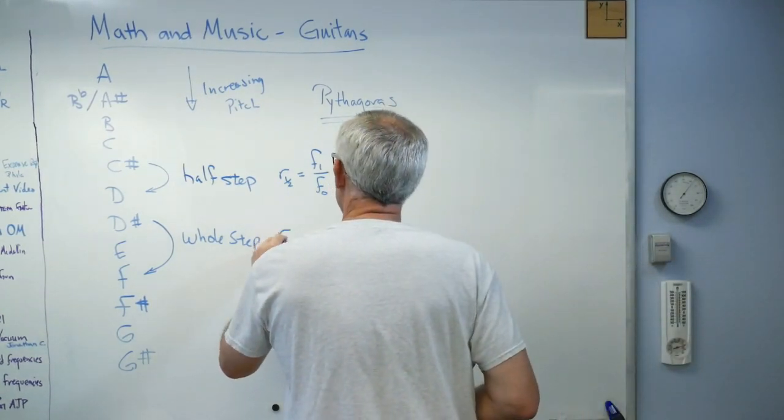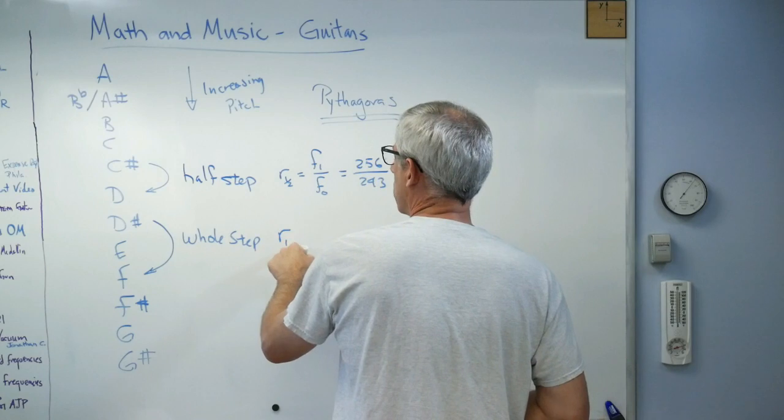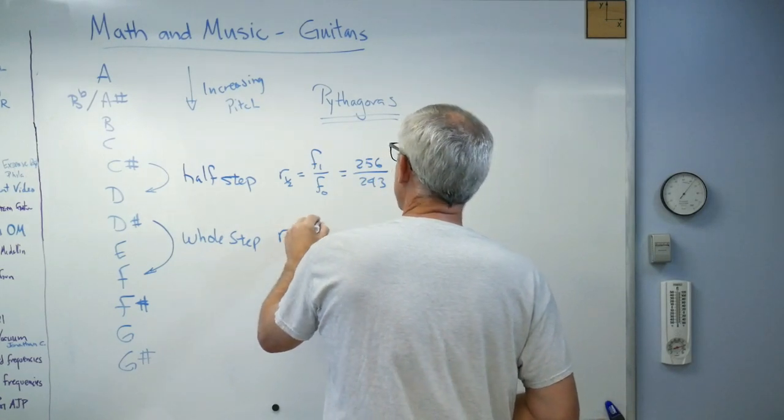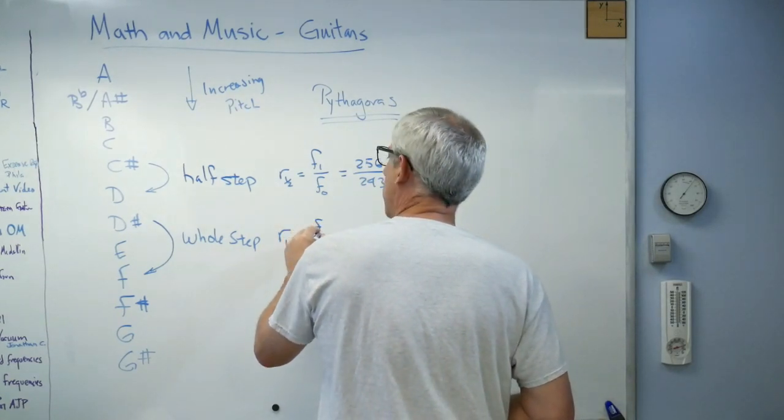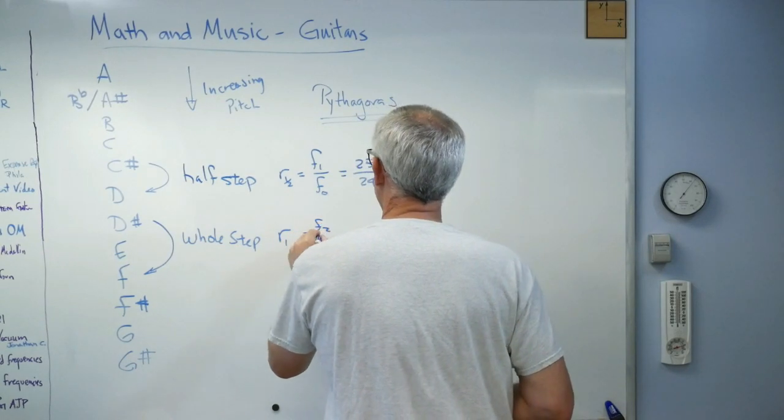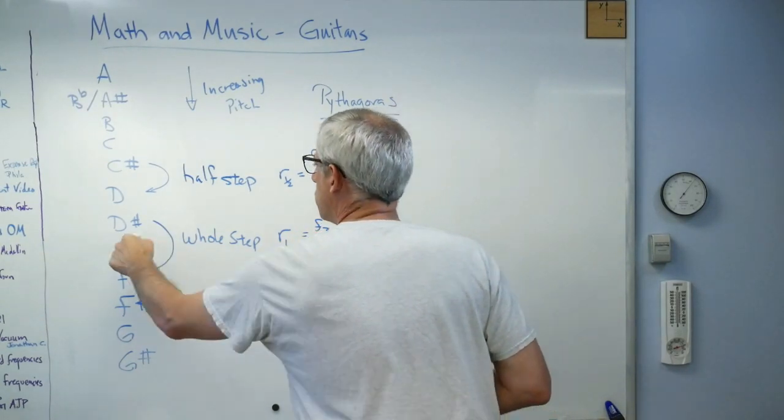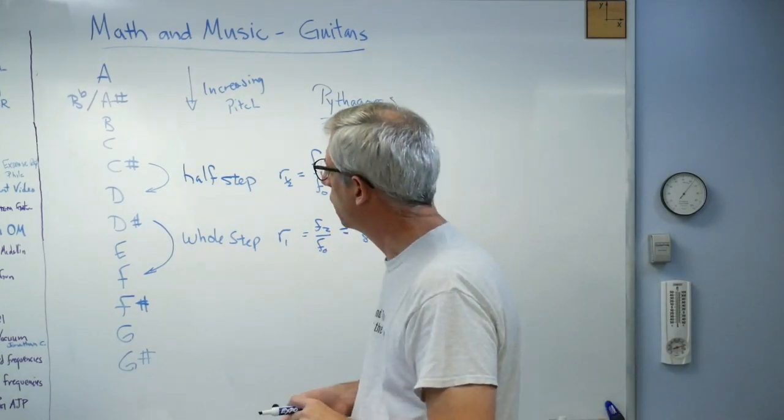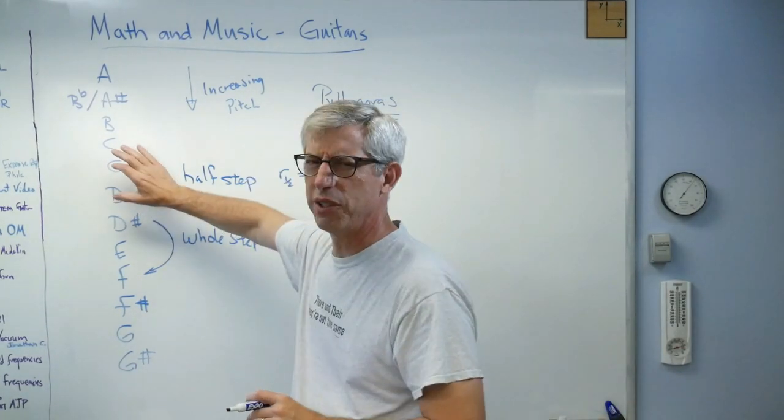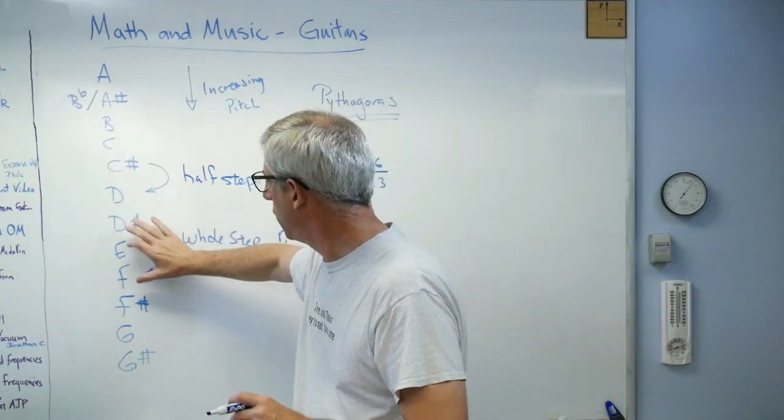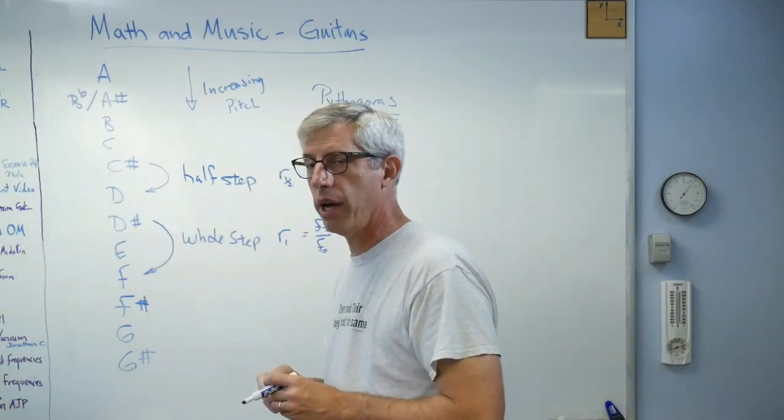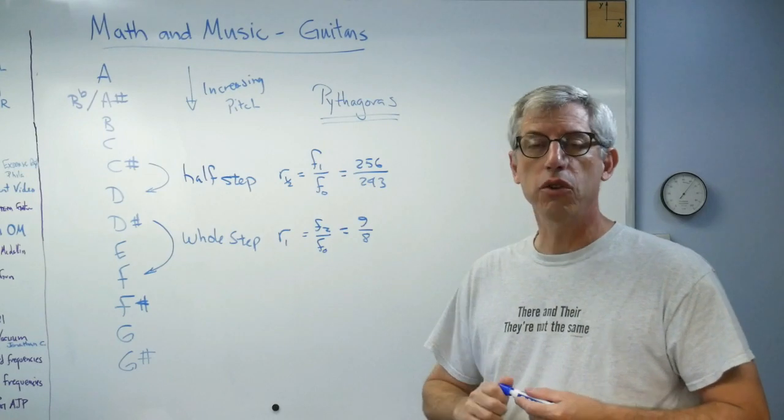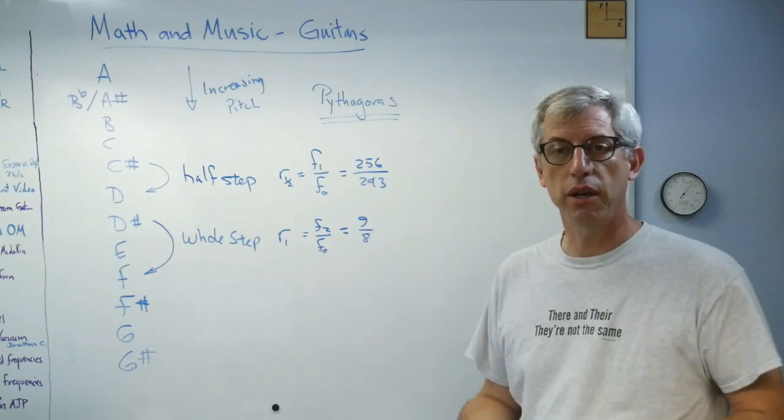Okay, so ratio of a whole step, and I'll call that superscript one, that's going to be F2 over F0, because there's two half-steps there. That was 9 over 8. So the frequency ratio there is 256 over 243, and when you have two of them, you get 9 over 8. Based on that, you should be able to make any set of scales you want.